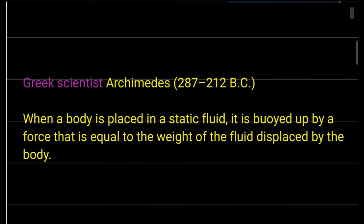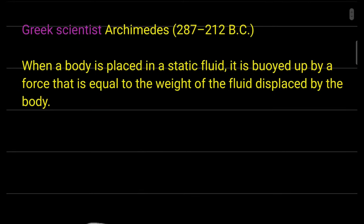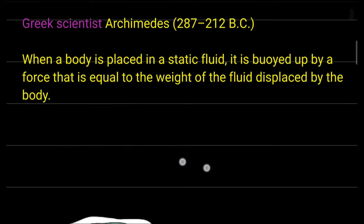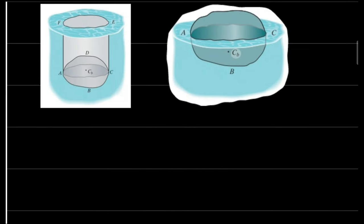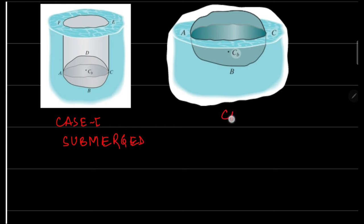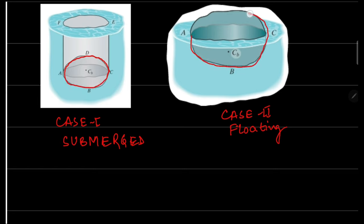To understand the principle of buoyancy, let's take two examples. In case one, a body is completely submerged inside the fluid — this is the submerged condition. In case two, a body is floating such that part of it is inside the fluid and part is above the water surface — this body is partially submerged and partially floating.